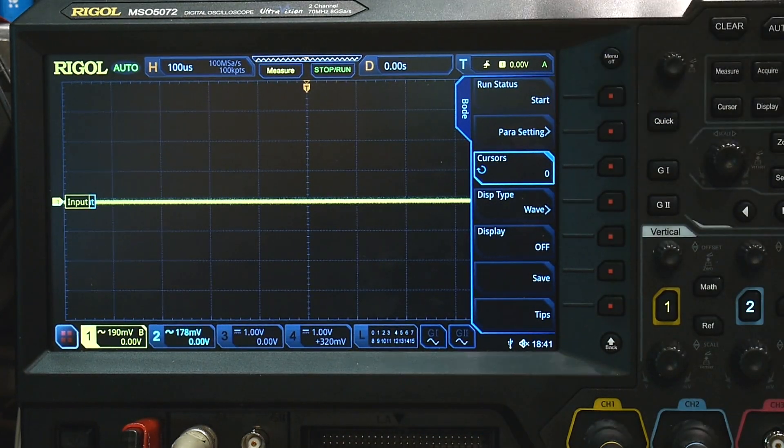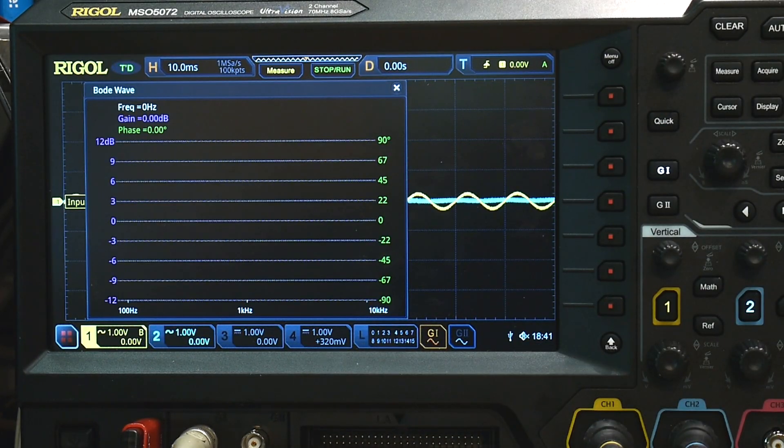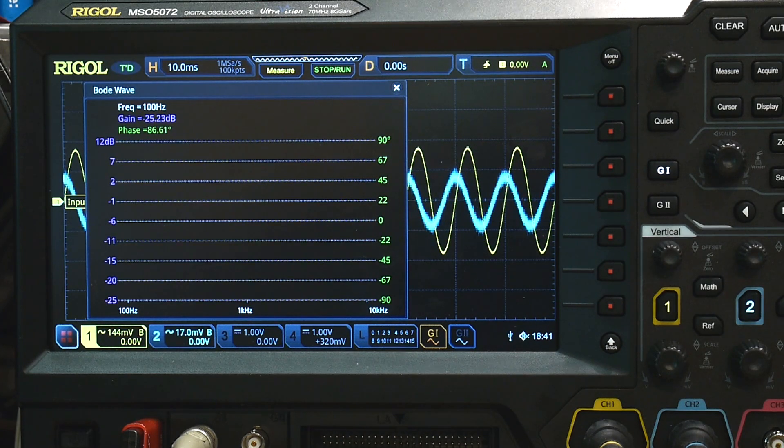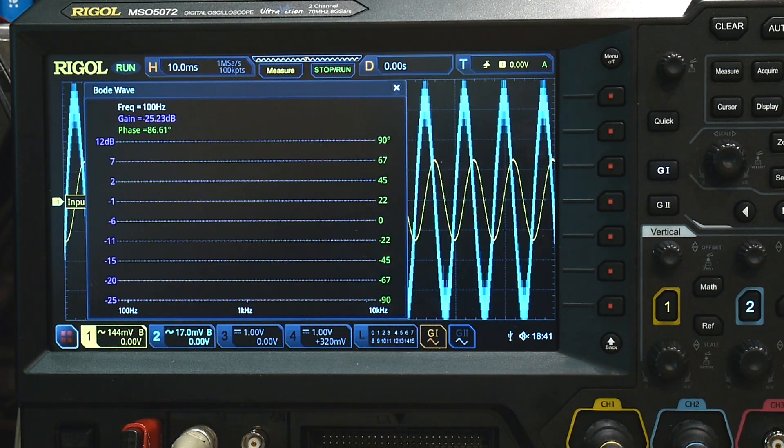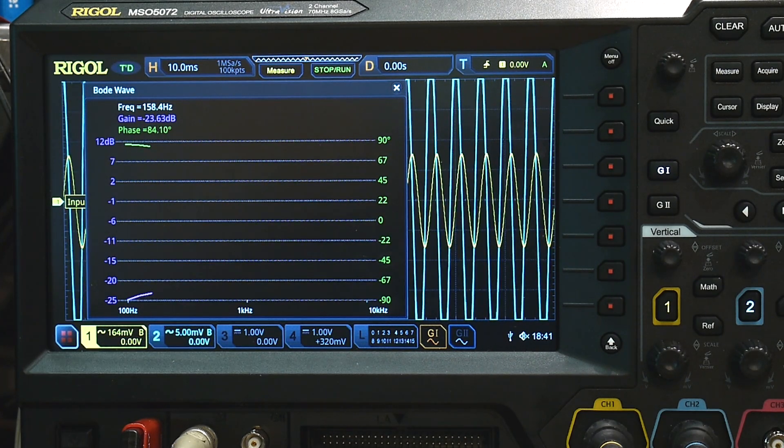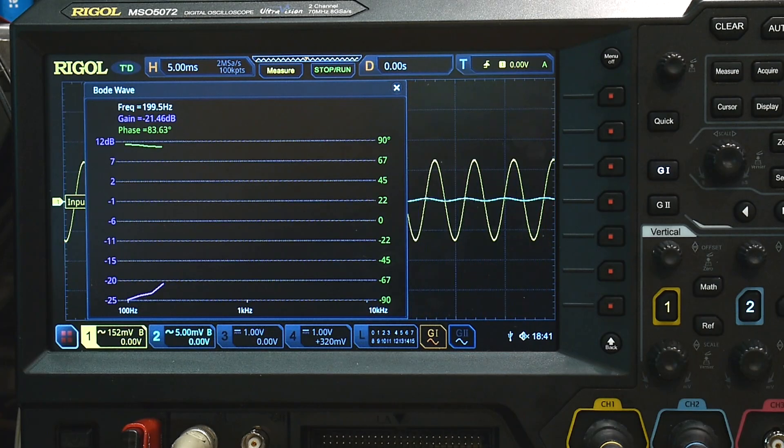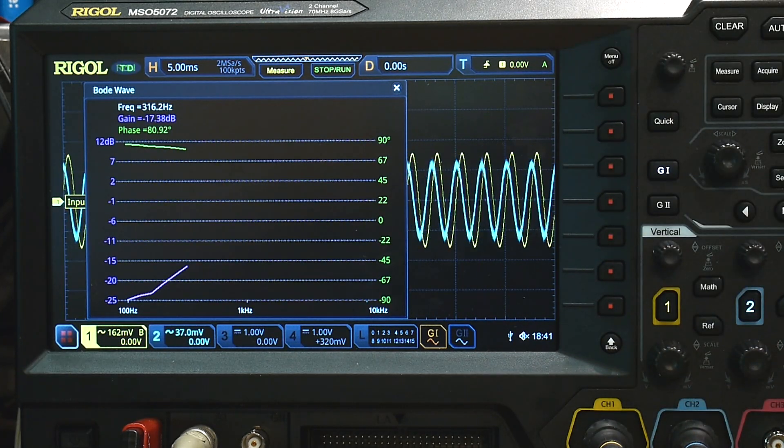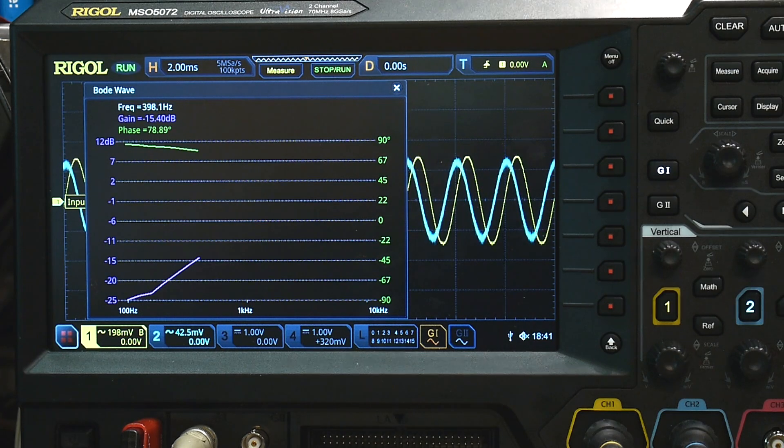All right, let's just push the start button and we should automatically get a Bode plot. You can see we already have a phase shift here when we're at low frequencies because it's rejecting the low frequencies.